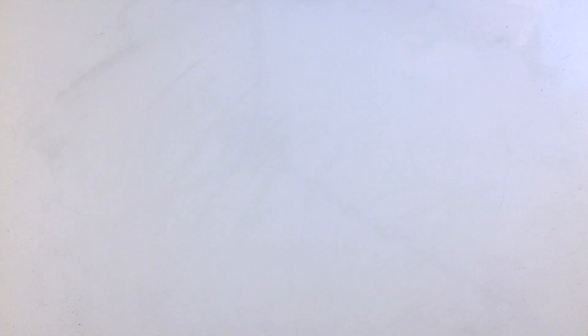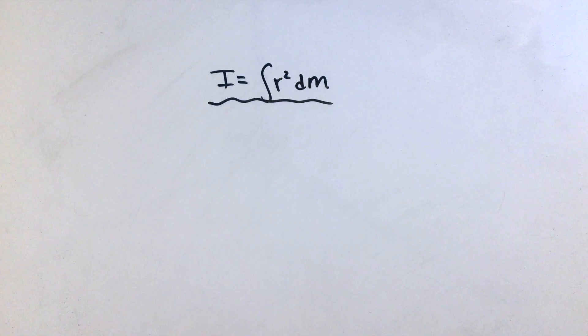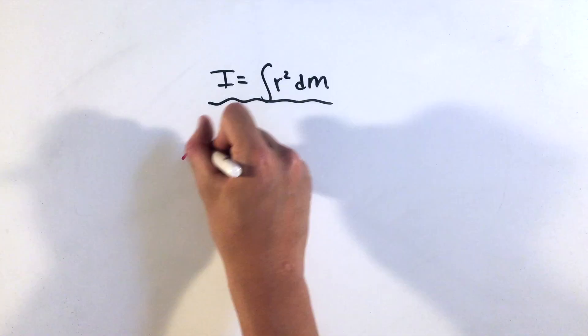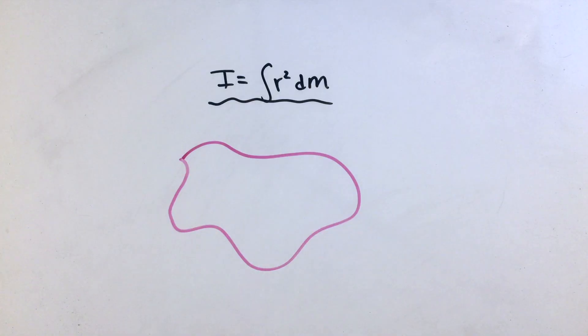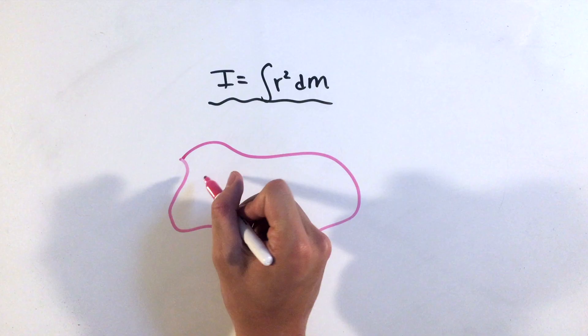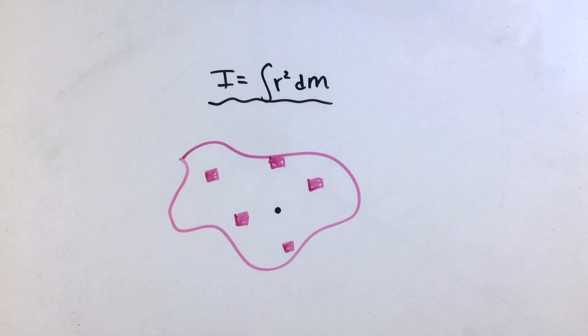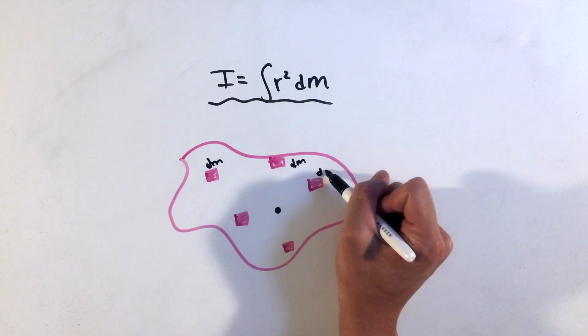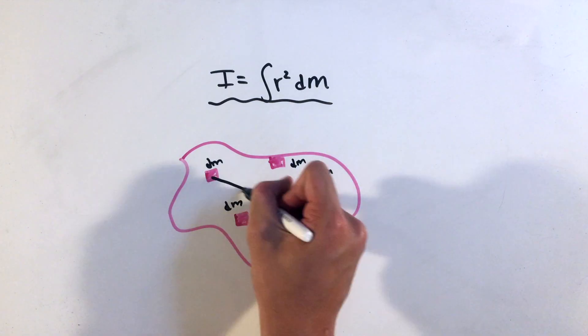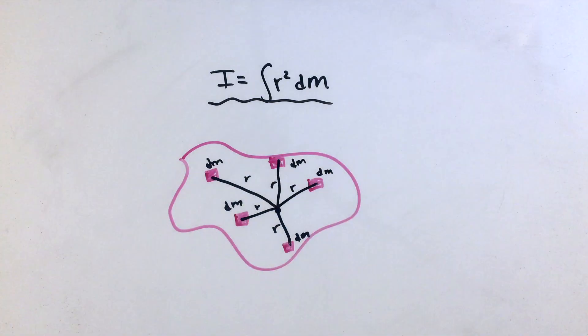In AP Physics C, we can actually derive each of these constants for different shapes. To do this, we need to learn the equation for moment of inertia: the integral of the radius squared with respect to infinitesimal masses dm. Essentially, we'll sum up tiny pieces of the shape and calculate each of their contributions to the overall moment of inertia.